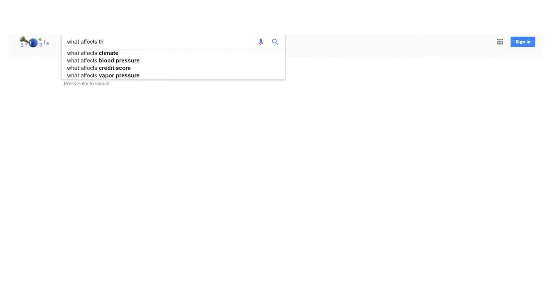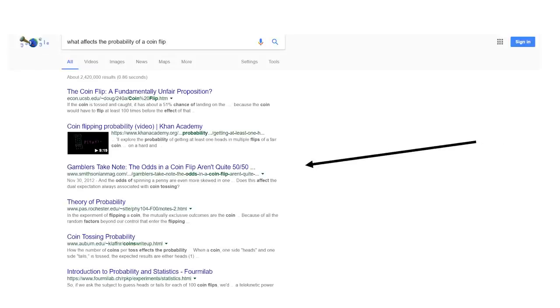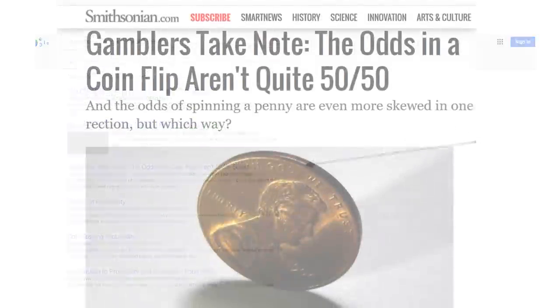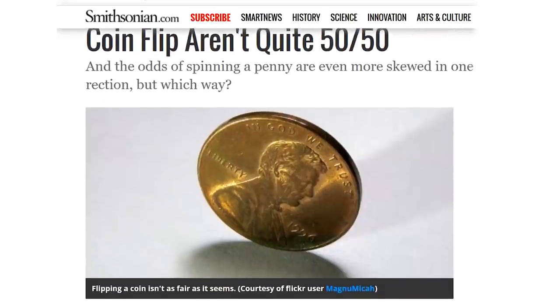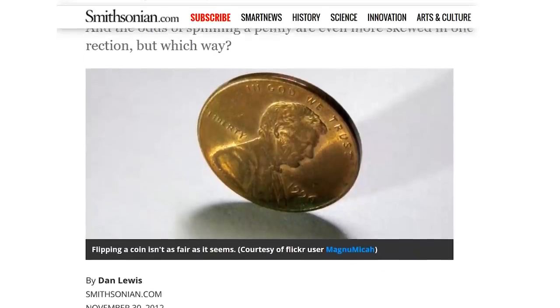For example, you go on Google and you type, what affects the probability of a coin flip. And you find this Smithsonian Magazine article that talks exactly about that. And in it, they mentioned research that found that most coins, if I show you the face of the coin first, like that, and then flip it, there's a 51% chance that the coin would land on that particular face.